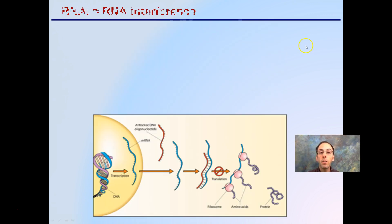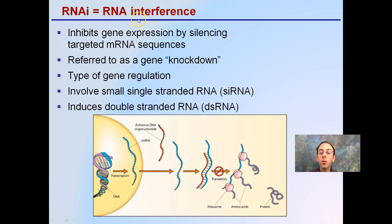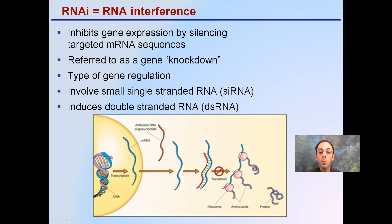There's one more type: RNAi, which stands for RNA interference. It inhibits gene expression by silencing targeted mRNA sequences, and it's referred to as a gene knockdown or silencer — a type of gene regulation. It develops a small single-stranded RNA (siRNA) and induces a double-stranded RNA (dsRNA). RNA needs to be single-stranded to be efficiently read, but when we have RNAi, it's interfering with this process — binding with the mRNA and causing it to be double-stranded, not allowing for it to be easily replicated in the ribosome. That can stop the production of a particular protein, because the cell might not need that protein. Cells do not want to continually invest energy to produce proteins they don't need.